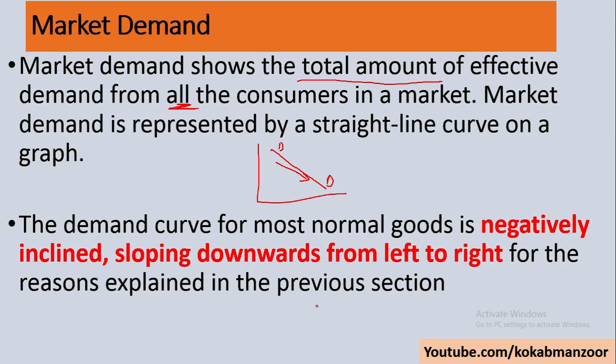As already explained, the reason it is negatively sloped is that there is an inverse relationship between price and demand. Inverse relationship means when one variable is decreasing, the other is increasing. So whenever there is an inverse relationship between two variables, the curve will be sloping downwards.